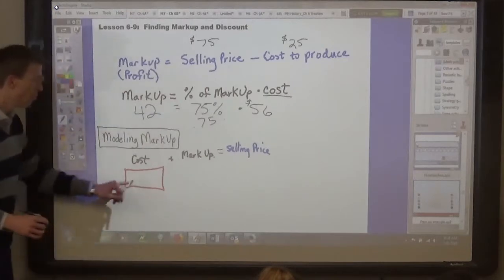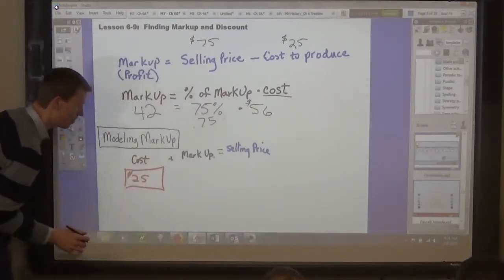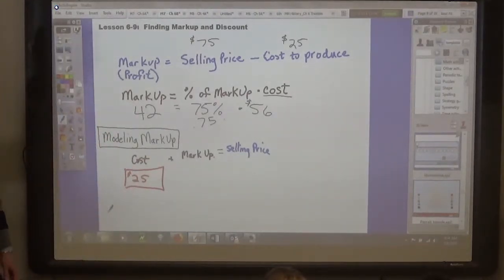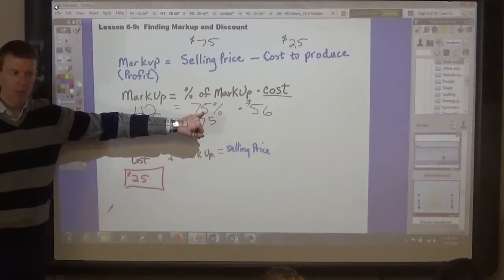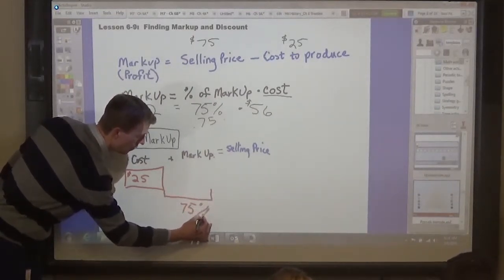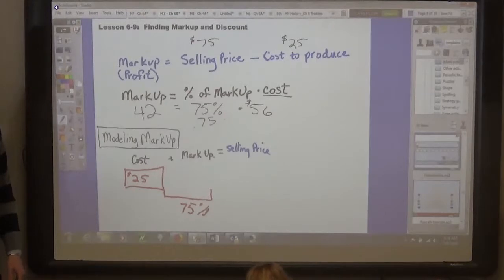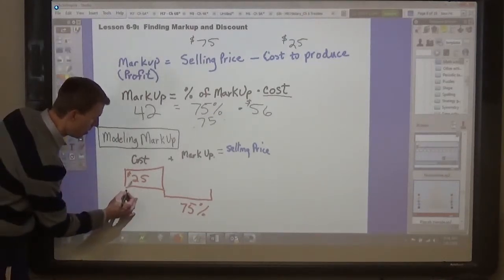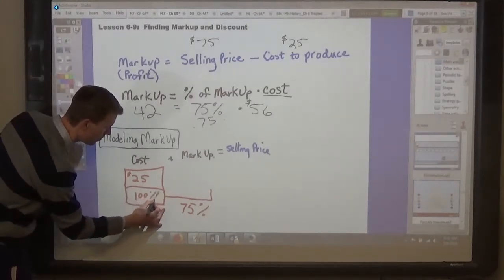Okay, now the basic model then for this is the cost is an amount. Let's say that the cost that you buy these shoes for is $25. And then you decide to mark up the shoes by 75%. Now 75% does not mean $75, it means 75% of the $25.